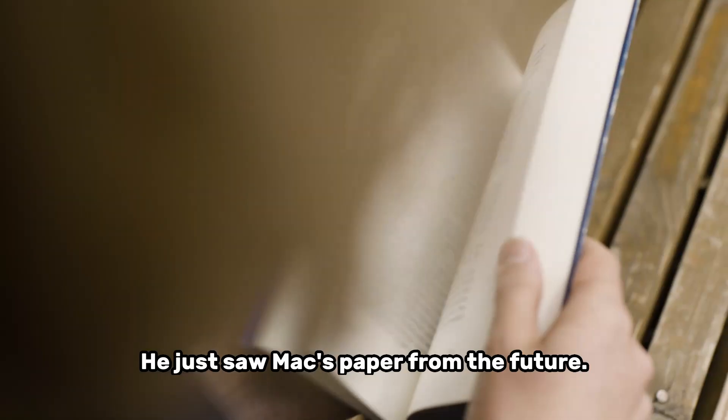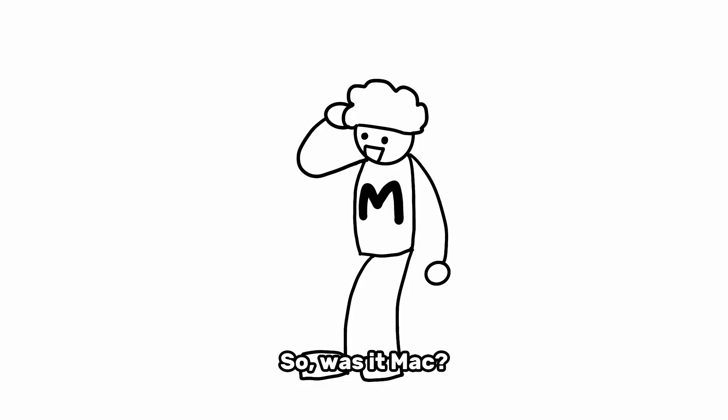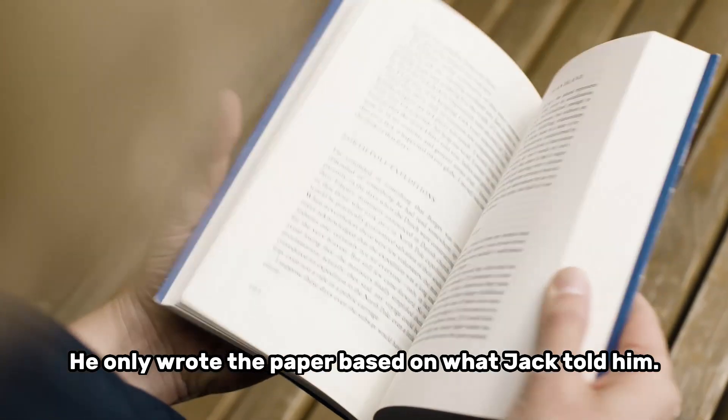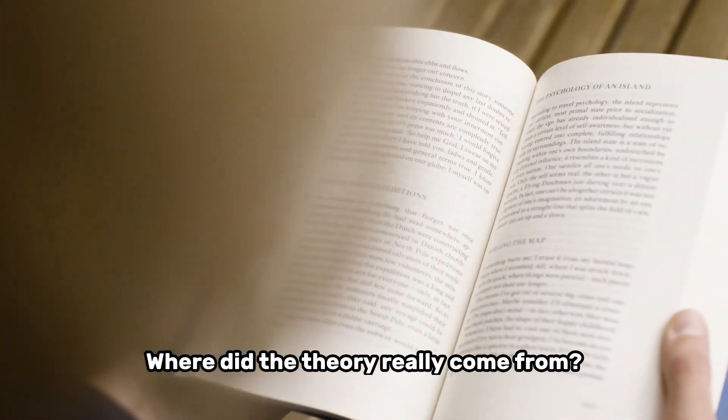Jack? He just saw Mac's paper from the future. So, was it Mac? He only wrote the paper based on what Jack told him. Where did the theory really come from?